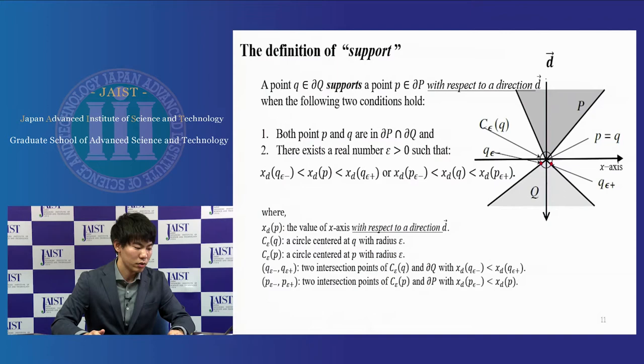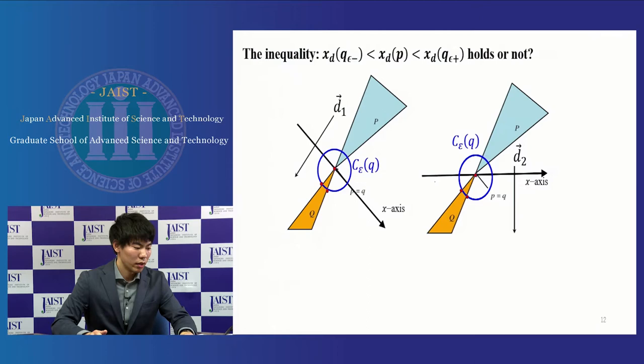This is the definition of support. A point Q in the boundary polygon Q supports a point P in the boundary polygon P with respect to direction D when the following two conditions hold. Intuitively, the neighbor of the point P or Q has a positive width for supporting the other point.